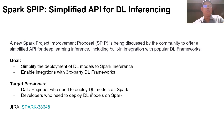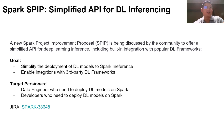Therefore, the Spark community has initiated a discussion on a Spark Improvement Proposal, called SPIP, hoping to hide the complex processes of each framework by providing a simple API, and to make the integration of Spark and AI inference smoother. The goal of this SPIP is to simplify the deployment of DL models to Spark inference, enable integration with third-party DL frameworks, and target data engineers or developers who need to deploy DL models on Spark. You can also search the Jira to learn more.